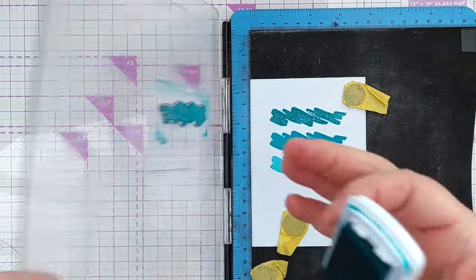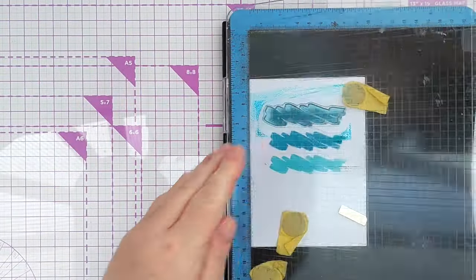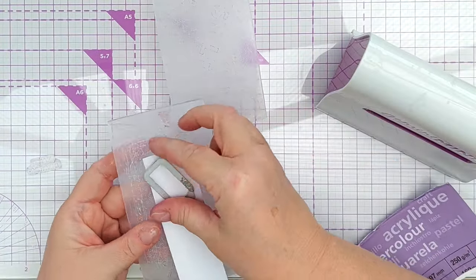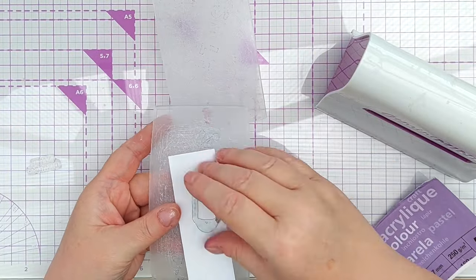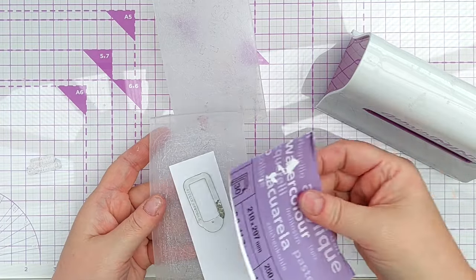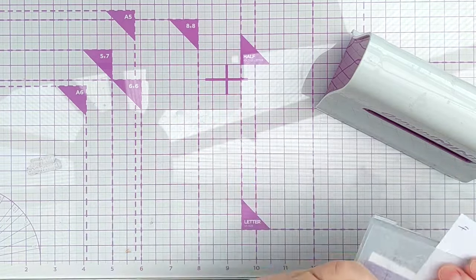So once I'd done that I set those off to dry and I cut two tags out of smooth white cardstock. I picked this particular tag because it's the perfect size for the happy birthday stamp that I wanted to use.